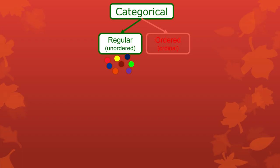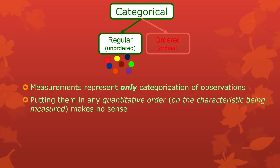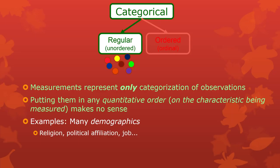We have regular categorical, or unordered, or nominal scales — that's where measurements represent only differences, only categorization. The only property you have is differences, and it doesn't make any sense with this kind of scale to put the observations in any quantitative order. Classic examples are demographics: what religion you are — that doesn't make any sense to order. What political affiliation you have — despite arguments we've had with people who used to be our friends — there's no natural order of Republicans, Democrats, Libertarians, Green Party. The type of job you have — there's no natural order to that. These are just varieties, multicolored differences in the world.